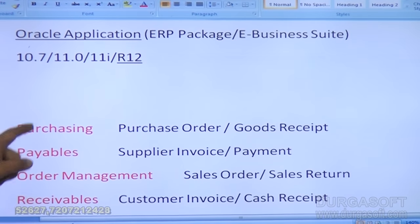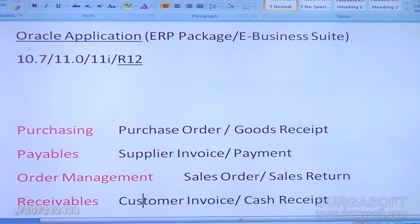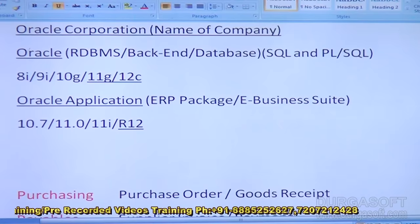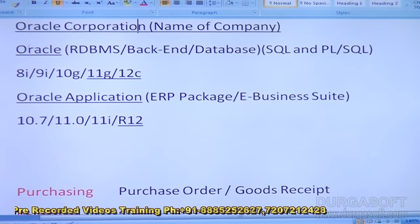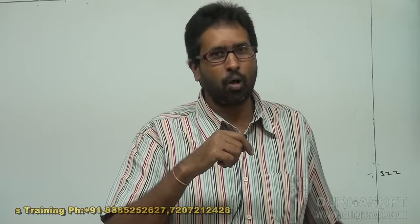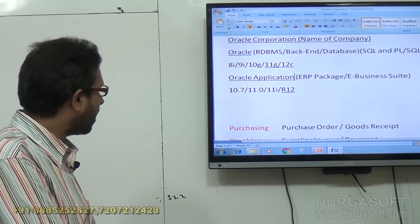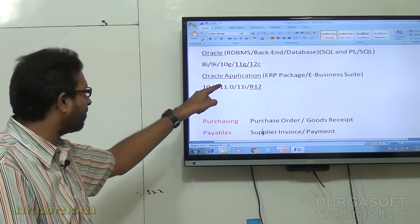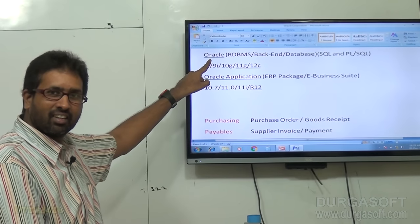ERP consists of modules. In the modules you process your data — you purchase, you record; you pay, you record. All this activity, whatever you are recording, finally goes and stores where? It goes and stores in a database. Just like the forest example — you are feeling so hungry but you never cut your stomach to put food directly. You record data in the Oracle application modules, and this data finally goes and stores in the Oracle database.